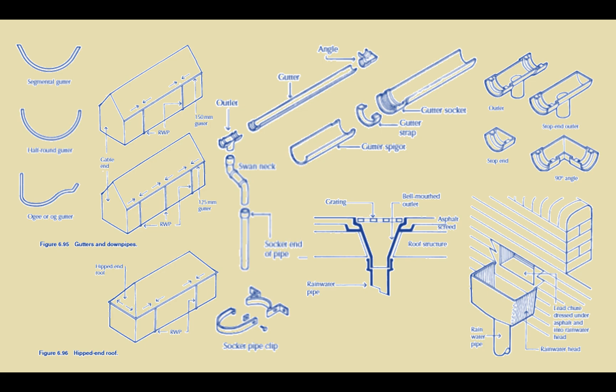This section will also help you understand and identify different types of gutter sections such as segmental, half round or OG gutter sections and also help you recognize how these are assembled together to form a complete rainwater gutter system.